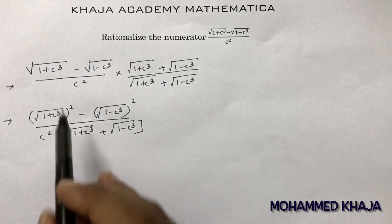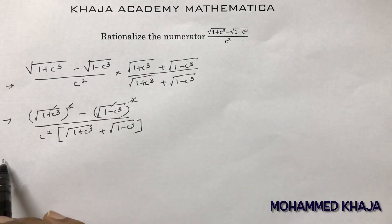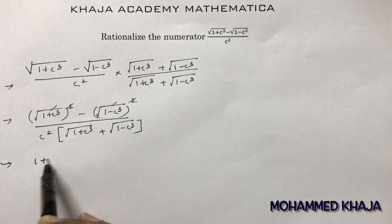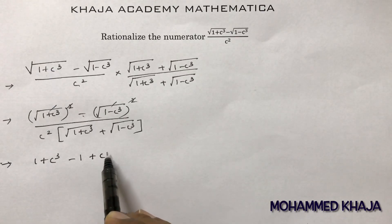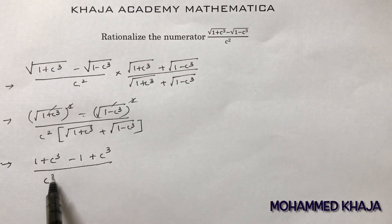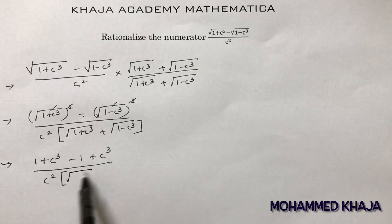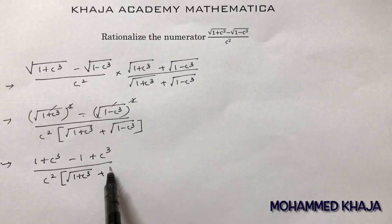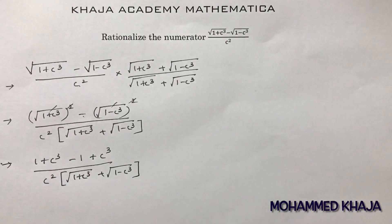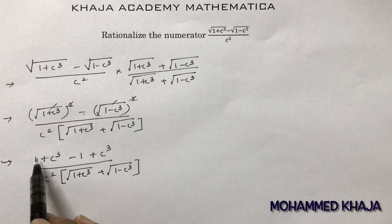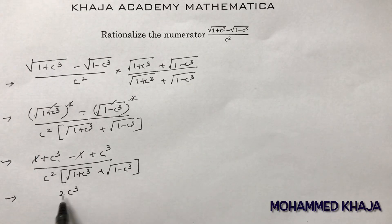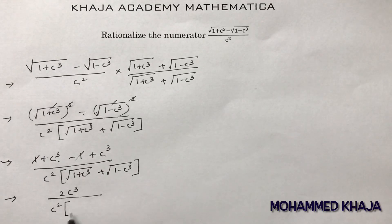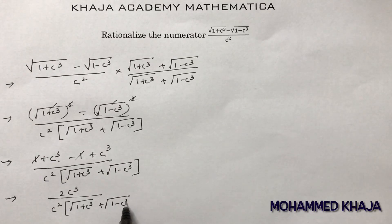The square and root cancel out. You are left with 1 + c³ minus 1 minus (minus c³), which simplifies: the 1 minus 1 cancels, giving c³ + c³ = 2c³. So the expression becomes 2c³ divided by c² times (root(1 + c³) plus root(1 - c³)).